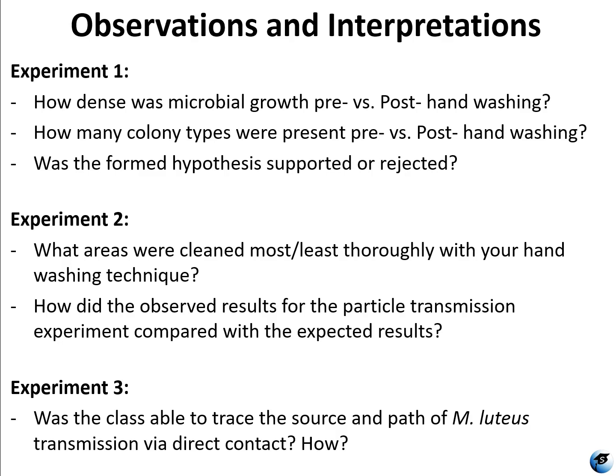When you come back, the lab one results that had to be incubated — experiment one and experiment three — you won't get those results until you come back for lab two. For experiment one, you're going to want to look at the density of growth pre and post hand washing, as well as different colony types. If colonies look different — different sizes, colors, or shapes — that is indicative of different species. So you can determine if there's more bacteria in general or more species represented, and then determine if your hypothesis was supported or rejected.